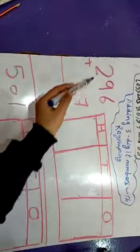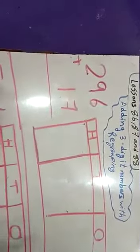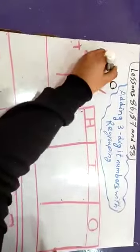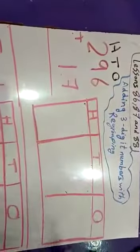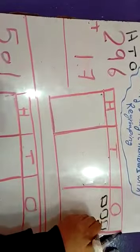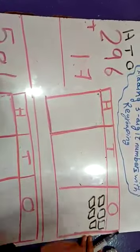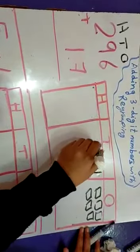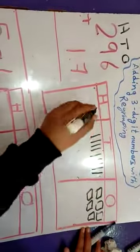First one: 296 plus 17. 1, 10, 100, 1, 2, 3, 4, 5, 6. 10, 10, 10, 10, 10, 10, 10, 11, 11, 12, 12, 15.